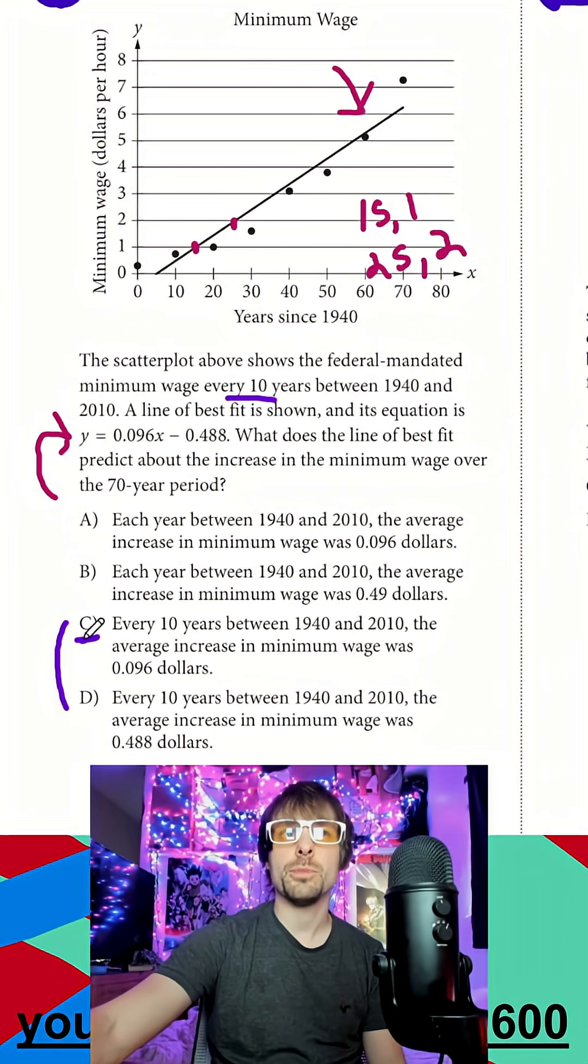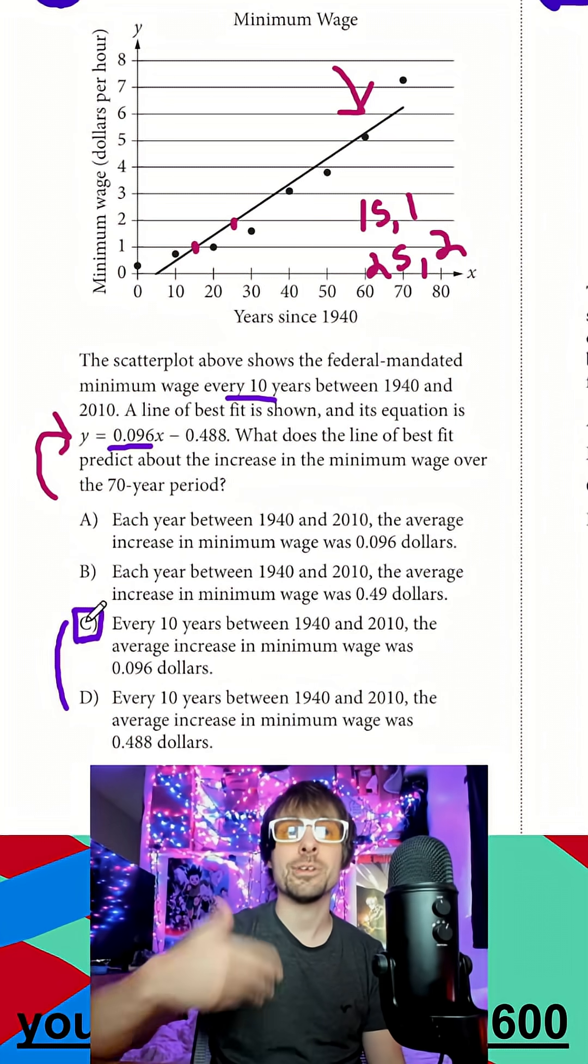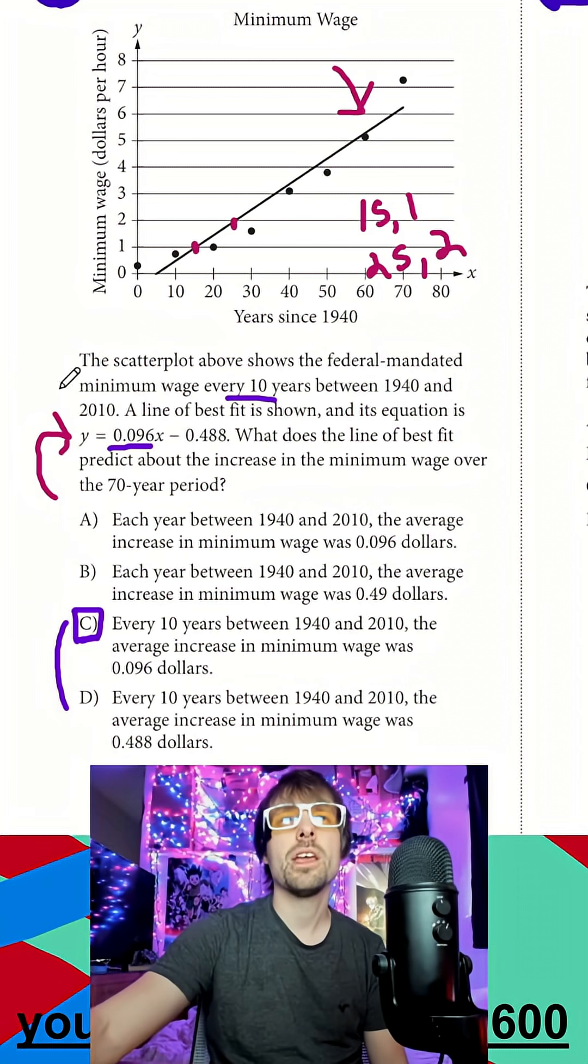I think C especially people gravitate towards because I see my 0.096. I see every 10 years. And again, you might say, well, C is every 10 years, it increases by 0.096, right?